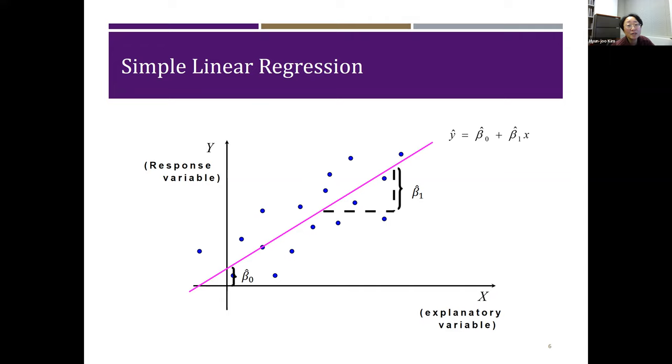Our first goal is to find out this pink trend line that explains the data with a simple straight line. From basic algebra, we know that a straight line equation is that the response variable Y is equal to y-intercept plus slope times explanatory variable. Here we have the same format, with beta nought as a y-intercept and beta 1 as slope.